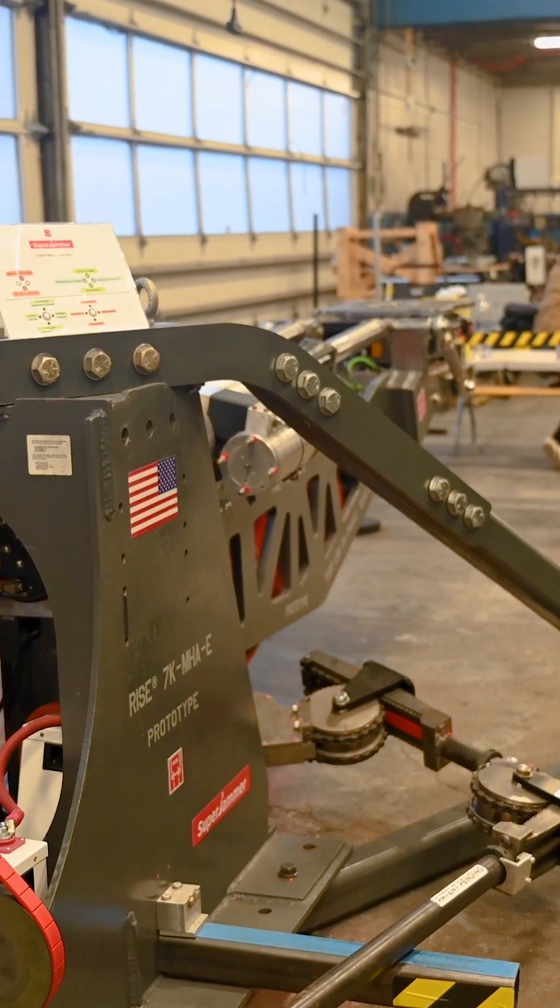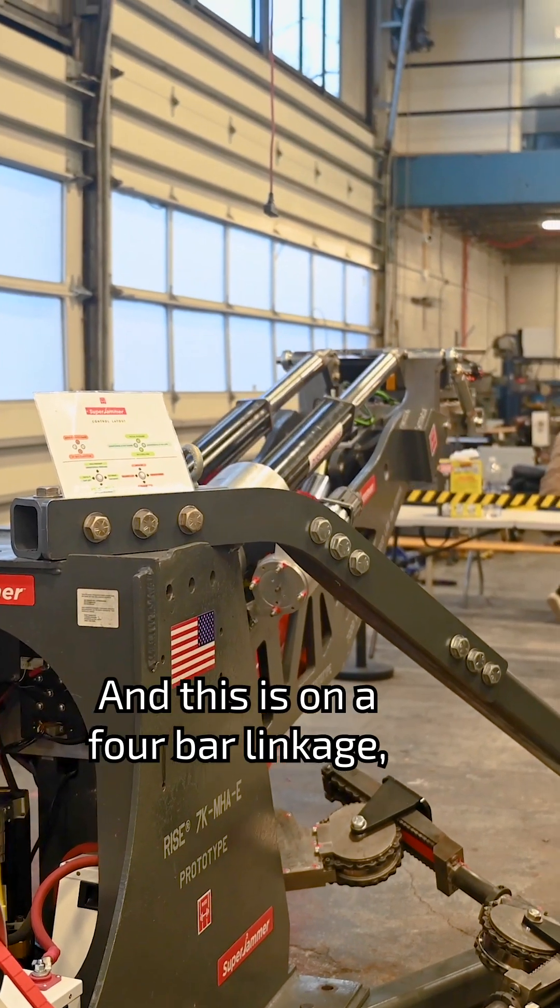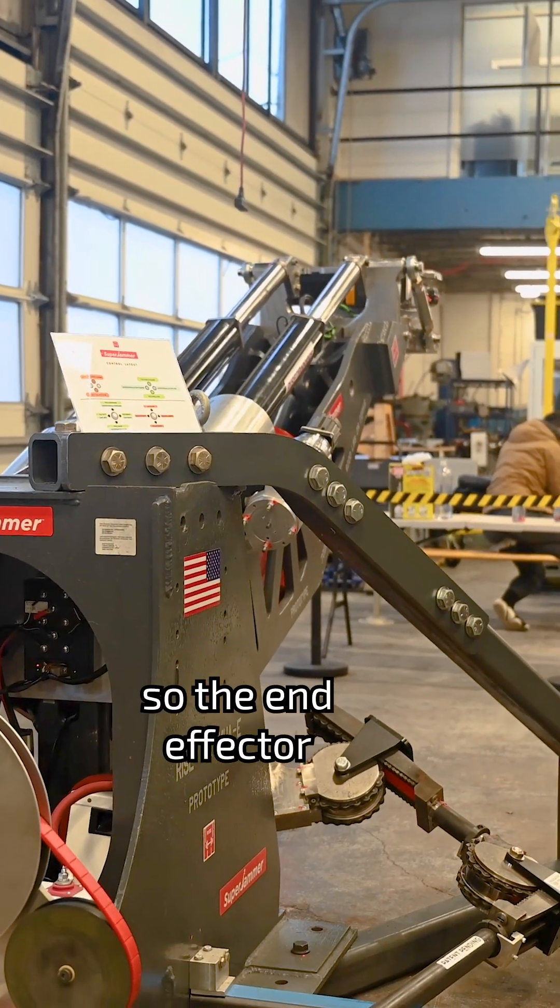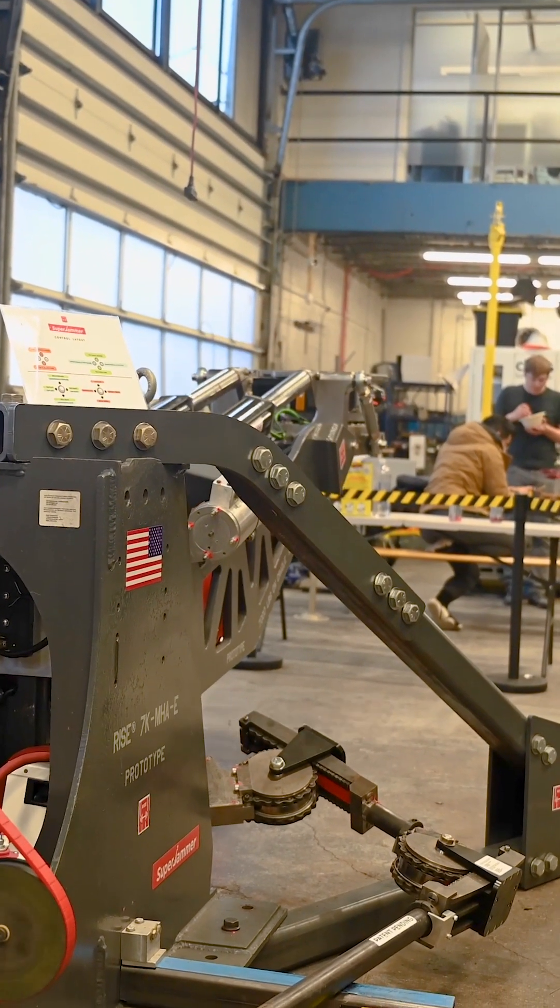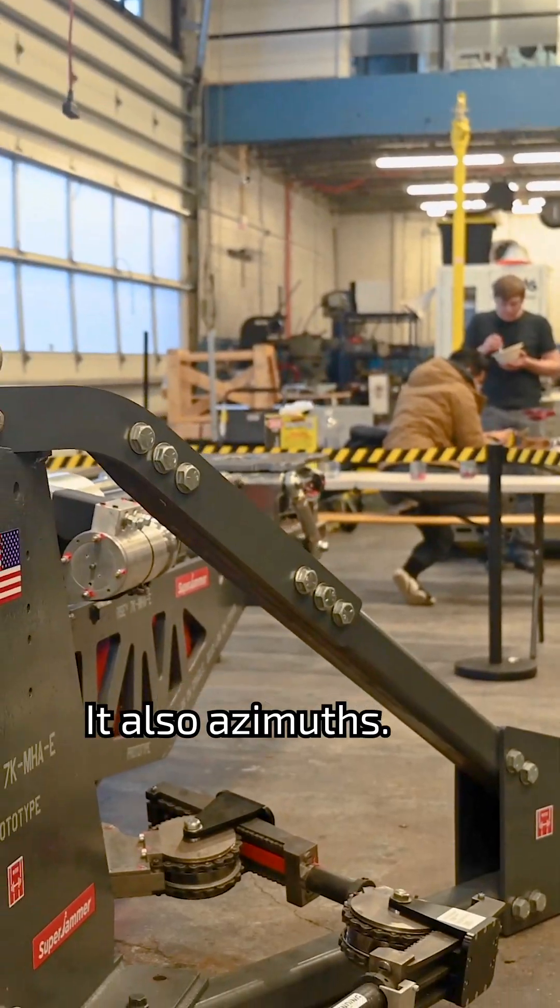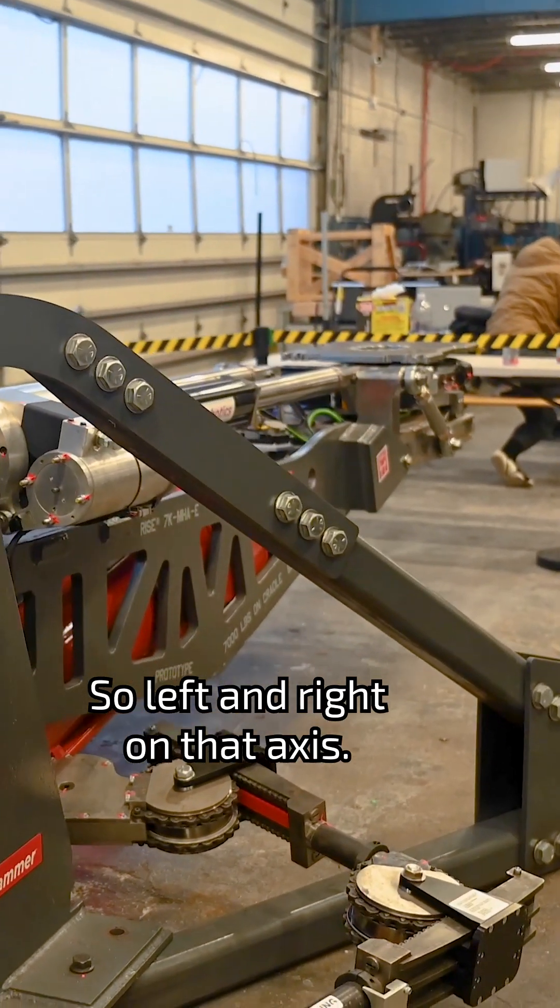It can go up and down, like that. And this is on a four bar linkage, so the end effector stays level as we're moving through the lift axis. It also azimuths, so left and right on that axis.